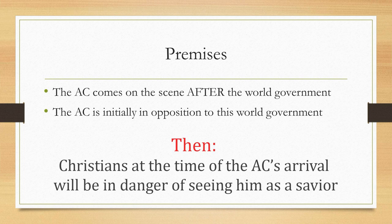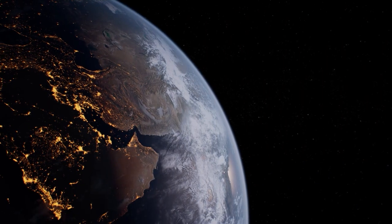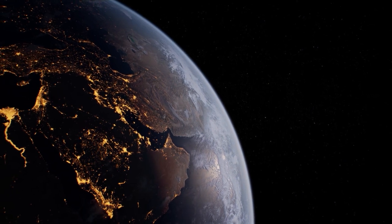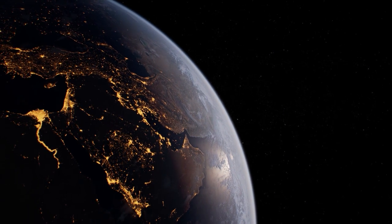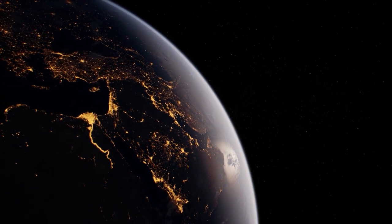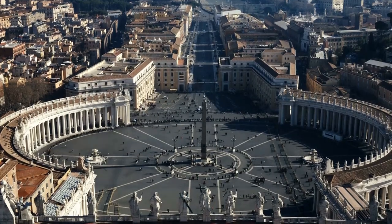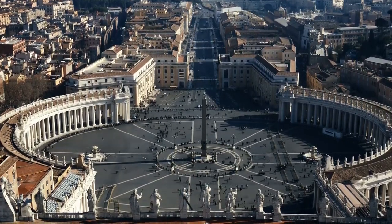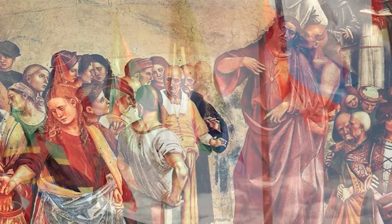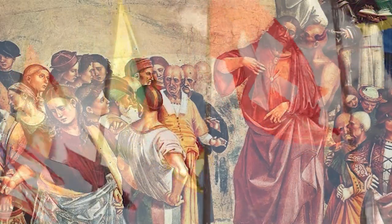This would all be amplified by the fact that this last empire would be a global government. In the past, belief that a given government was the Antichrist system was limited to the area being oppressed by it. Christians in Europe persecuted by the Catholic Church were the ones promoting that the Church was the Antichrist system — it wasn't a belief the whole world shared. The same with Nero, Attila the Hun, Genghis Khan, Napoleon, Hitler, and Stalin, all of whom have been proposed as Antichrist candidates by the populations they ruled.